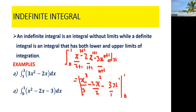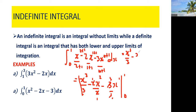We can simplify: 2 over 2 is 1, and 1 over 1 is 1. So we rewrite this as x raised to the power 3 over 3, minus x squared, minus 3x, with limits 1 and 0.